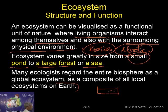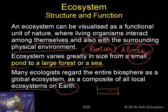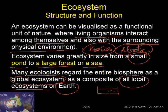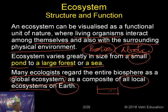The whole earth is considered to be a composite ecosystem. Many ecologists regard the entire biosphere as a global ecosystem — a composite of all local ecosystems on earth. So all the local ecosystems put together form the global ecosystem. What we understand from this is that ecosystem mainly concerns the biotic relationship and the abiotic relationship of a particular plant or animal.